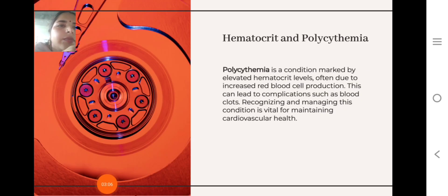Hematocrit and Polycythemia. Polycythemia is a condition marked by elevated hematocrit levels, often due to increased red blood cell production. This can lead to complications such as blood clots. Recognizing and managing this condition is vital for maintaining cardiovascular health.